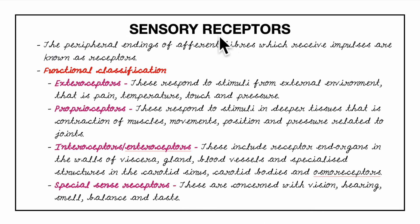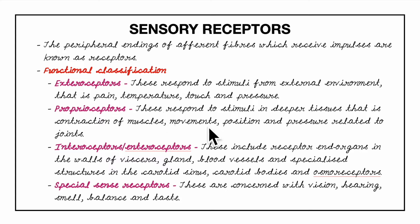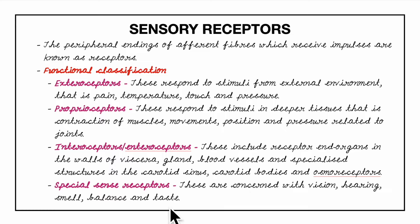Sensory receptors are the peripheral endings of afferent fibers that receive impulses. They are functionally classified into exteroceptors, proprioceptors, interoceptors, and special sense receptors. Exteroceptors respond to stimuli from the external environment — pain, temperature, touch, and pressure. Proprioceptors respond to stimuli in deeper tissues such as muscle contraction, movement, position, and joint pressure. Interoceptors include receptor end organs in the walls of viscera, blood vessels, and specialized receptors in the carotid sinus, carotid bodies, and osmoreceptors. Special sense receptors are concerned with vision, hearing, smell, balance, and taste.